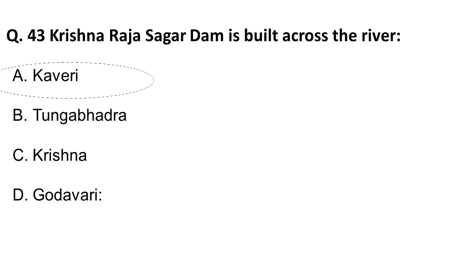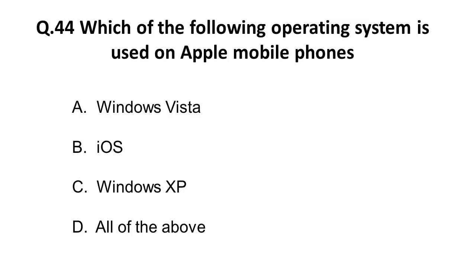The next question: which of the following operating systems is used on Apple mobile phones? The options are Windows Vista, iOS, Windows XP, and all of the above. Apple uses their own operating system, which is iOS. The correct answer is iOS.